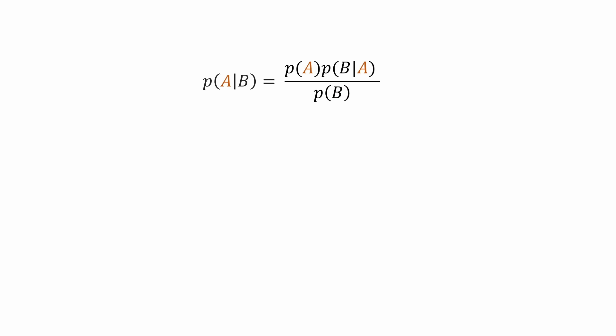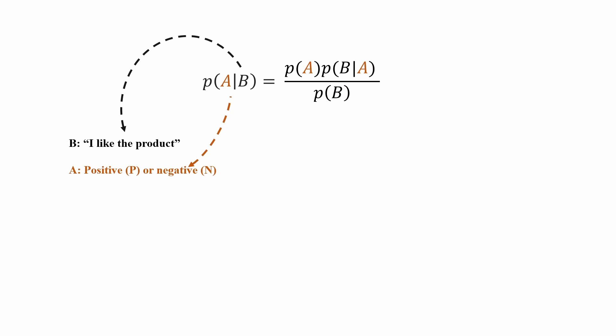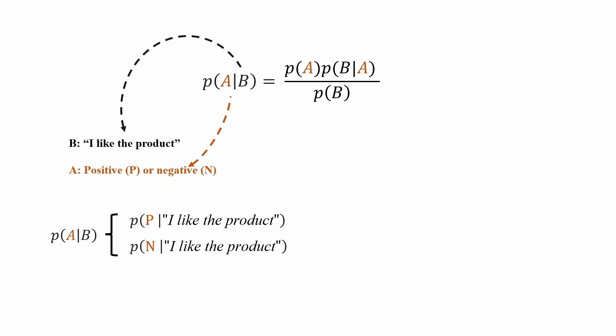This formula statement we just discussed can also be used in the situation of sentiment classification. Instead of rolling a die, B is the sentence and A is the sentiment — political or negative. You can write the probability of political given the sentence, or negative given the sentence. The question is: which probability is greater? If the political probability is greater, we say the sentence is political; if negative is greater, we say it is negative.